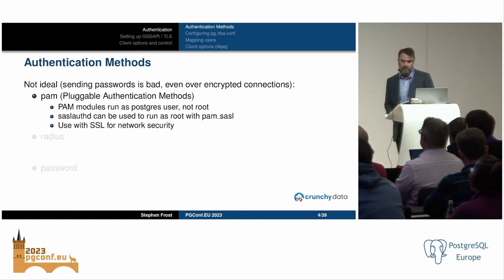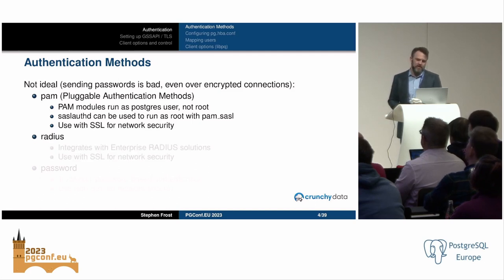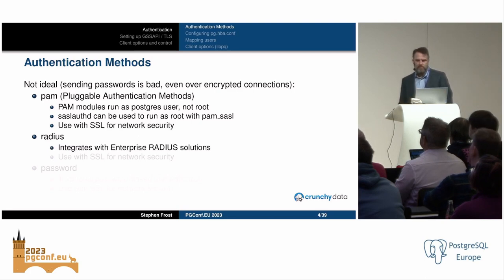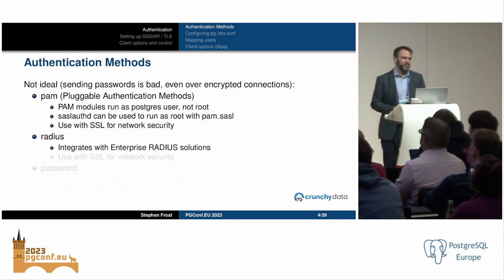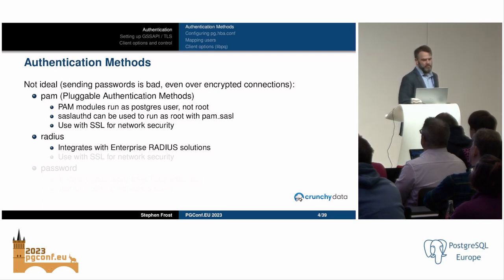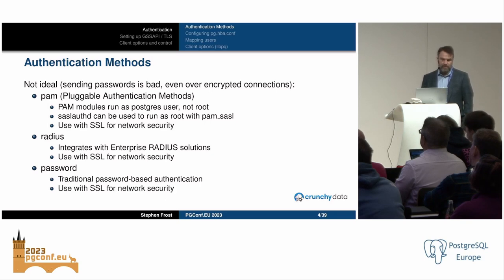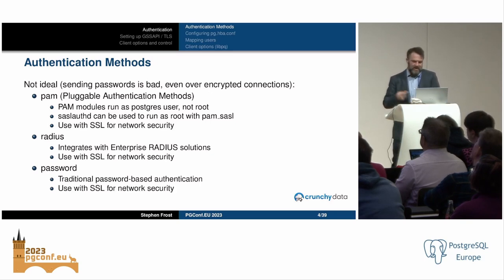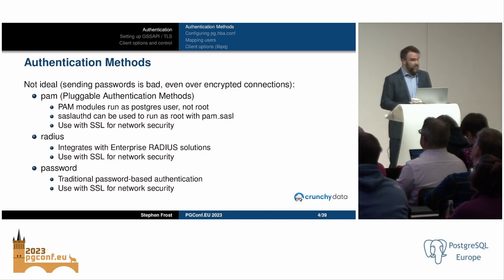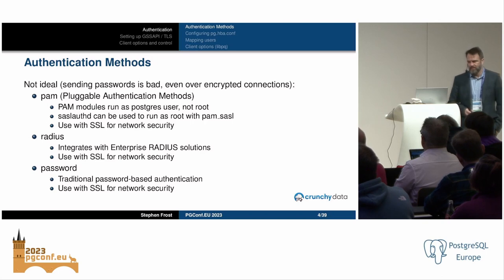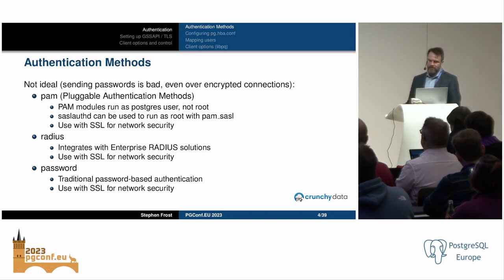It's also a bad idea to save cleartext passwords on any system. Radius is another method — it's a little better because it's typically used with a one-time password system, but it still sends that information in the clear to the server. The traditional password-based authentication method also sends passwords over the wire, and even through encrypted connections, that is bad practice.